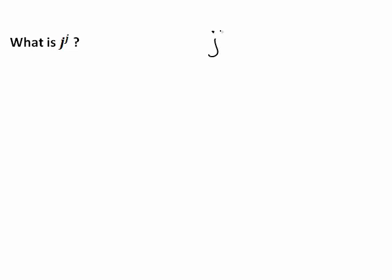In this recording, we look at the question: what is j to the power of j? Here j is the complex number that satisfies j squared equals negative 1. When we're working out j to the power of j, the easiest way to do this is using complex exponential polar form.